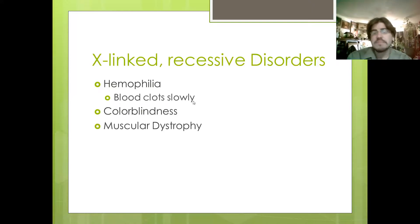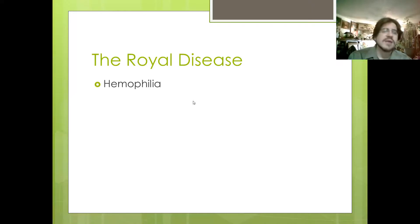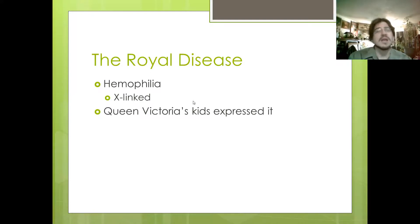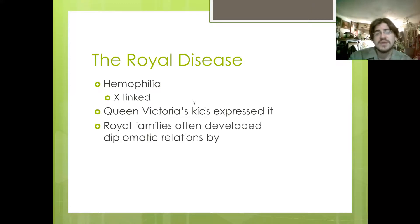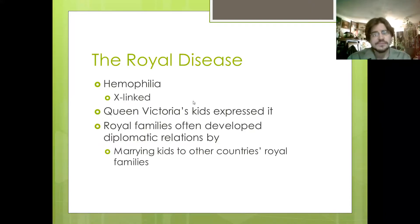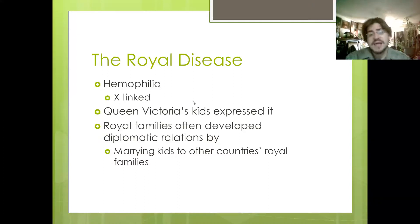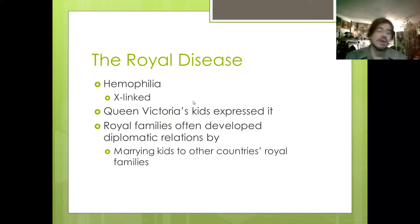Colorblindness, muscular dystrophy — also X-linked. Hemophilia is known as the royal disease. It's X-linked, and Queen Victoria of England — her kids expressed hemophilia. Royal families often produced diplomatic relations and allies with other countries by marrying off their kids. So when Queen Victoria married her kids off to other royal families, she married hemophilia into those royal families, and you started to see hemophilia cropping up all over Europe — that's why they called it the royal disease.